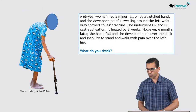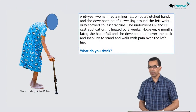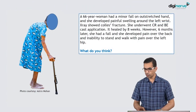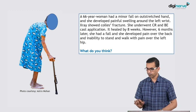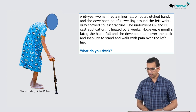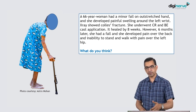This is a 66-year-old woman who had a minor fall on an outstretched hand and she developed a painful swelling around the left wrist. X-ray showed a Colles fracture.